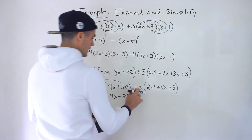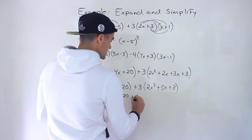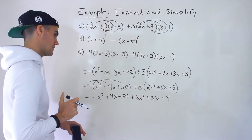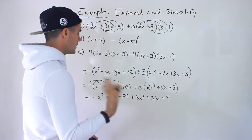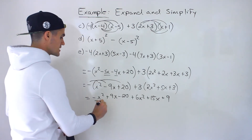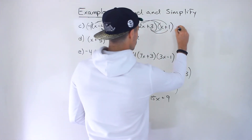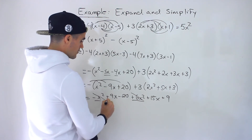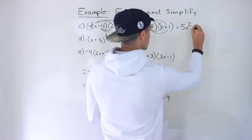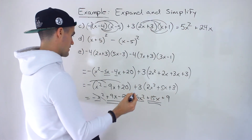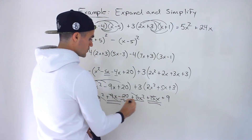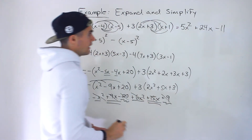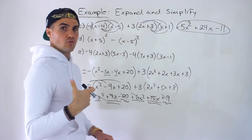Distributing the 3 into the second bracket: 3 times 2x squared gives 6x squared; 3 times 5x gives 15x; 3 times 3 gives positive 9. Now collecting like terms: negative x squared plus 6x squared gives positive 5x squared. Then 9x plus 15x gives 24x. And negative 20 plus 9 gives negative 11. So the final answer for part C is 5x squared plus 24x minus 11.